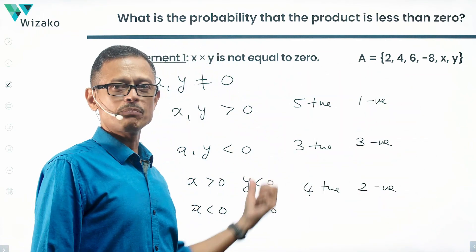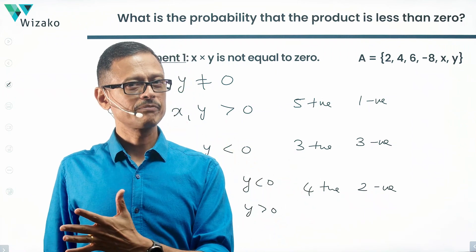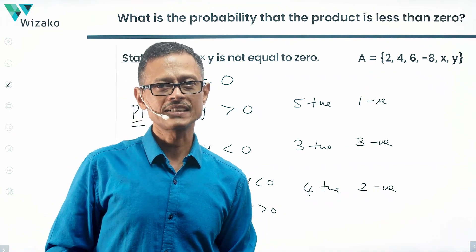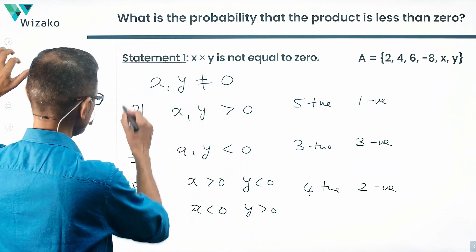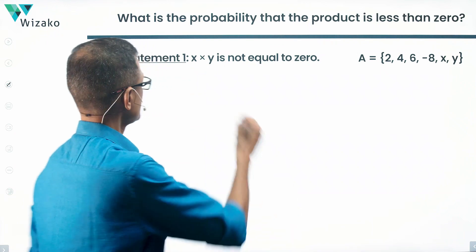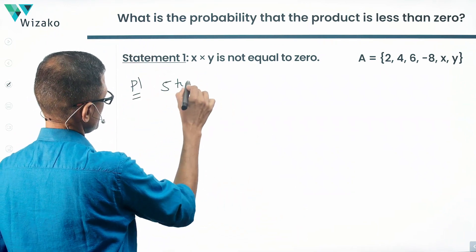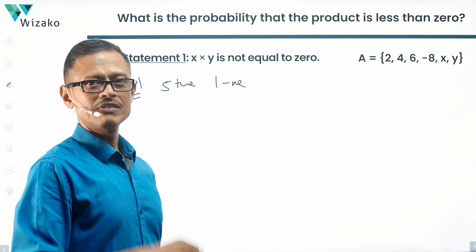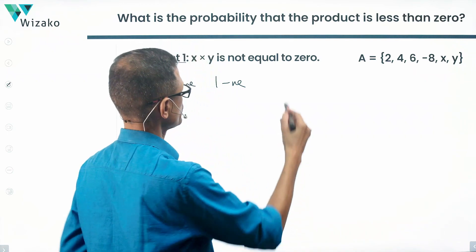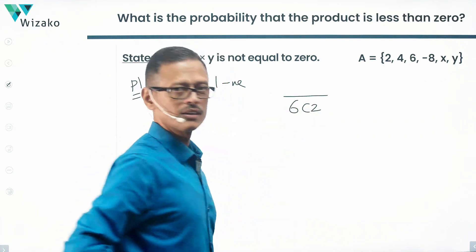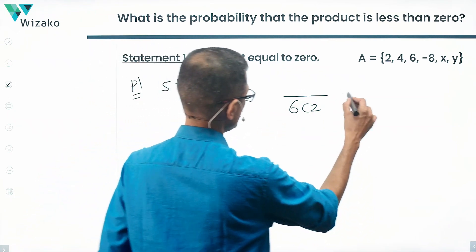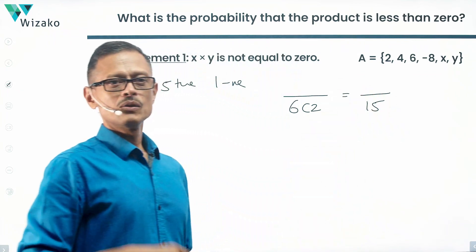So the number of positive and negative numbers in Set A could be one of three configurations: five positive and one negative; three positive and three negative; or four positive and two negative. Will this make a difference to the probability that the product of two selected numbers is negative? Yes it will. Let's compute the probabilities for possibilities 1 and 2 to establish that these yield different answers.